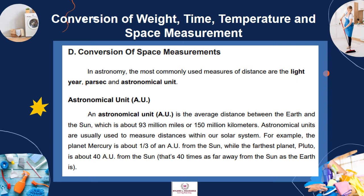Letter D: Conversion of Space Measurements. In astronomy, the most commonly used measures of distance are the light year, parsec, and astronomical unit. The astronomical unit, or AU, is the average distance between the Earth and the Sun, about 93 million miles or 150 million kilometers. Astronomical units are usually used to measure distances within our solar system. For example, Mercury is about one-third of an AU from the Sun, while Pluto is about 40 AU from the Sun — 40 times as far away from the Sun as the Earth is.